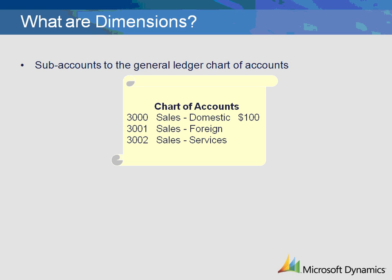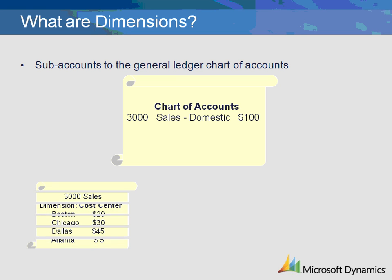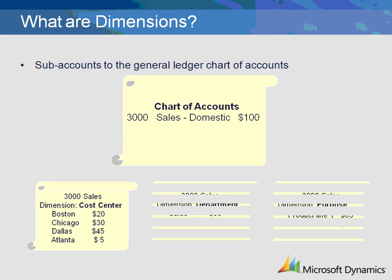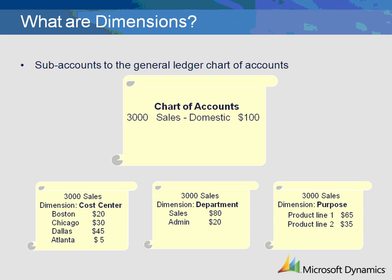Let's take Account 3000 as an example. Account 3000 has a balance of $100, and this balance can be analyzed by dimension. Microsoft Dynamics AX contains three standard dimensions: cost center, department, and purpose. The cost center dimension in this example is used to represent the location — the balance of $100 is broken down by each location. The department and purpose dimensions will break down the same $100 balance into user-defined dimensions.